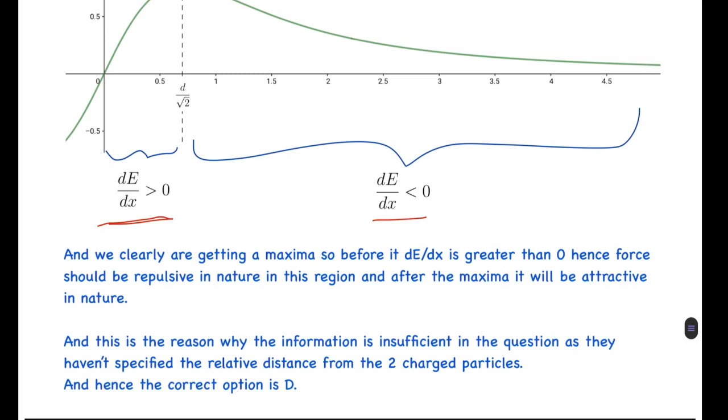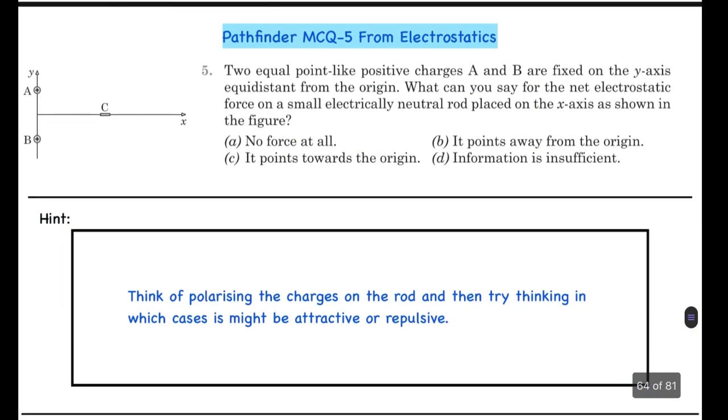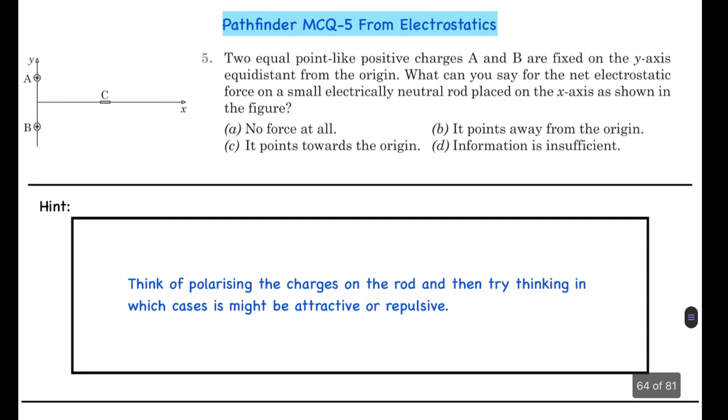And this is the reason why the information is insufficient in the question, as they haven't specified the relative distance of the two charge particles. Hence the correct option is D. That was the solution for this question, and this is based upon a really nice idea that dE/dx is greater than zero or less than zero. Hope you all liked the video, please like, share and subscribe.